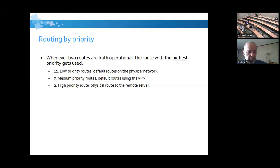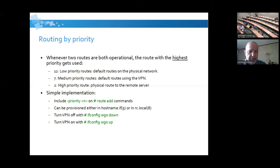Routing by priority looked pretty simple — the numbering scheme was a little odd to me. The lowest priority route I had was a default route, so I decided to set medium routes for my default to the VPN and a high priority route for the physical connection to the endpoint. The implementation was pretty easy: just adding a priority option on route add. I set up my big switch as an alias — ifconfig wg0 down and up.